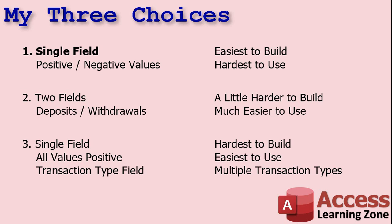First, you've got the single field. You put your transactions all in one field — call it amount or whatever you want. Credits will be positive values, debits will be negative values. This is the easiest to build for a beginner developer, but it's harder to use because you've got to remember to put your checks in as negative numbers and your deposits as positive. That can get confusing for the user. So I'll usually throw a little conditional formatting on that field to make it red or green depending. That's not too hard to teach beginners.